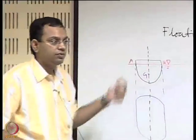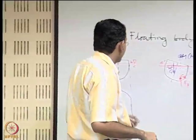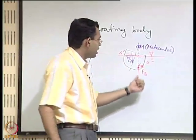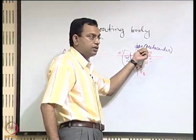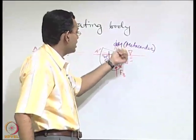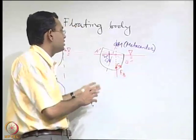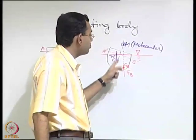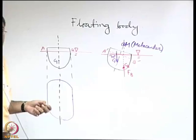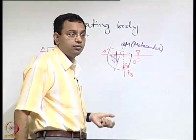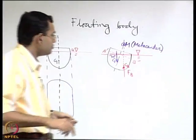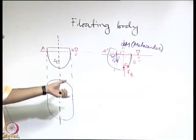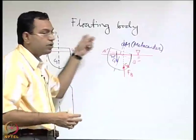We were discussing earlier about the stability of floating bodies and will continue with that. Recall the sketch from the previous class: we identified a point known as the metacenter. The motivation behind identifying this point is that when a floating body gets displaced and its submerged portion changes configuration, the centre of buoyancy does not remain fixed. So referring to a fixed centre of buoyancy might not work as a stability criterion. We will now find a stability criterion for floating bodies.